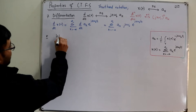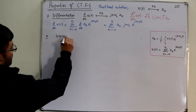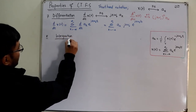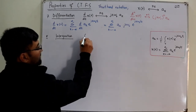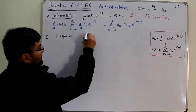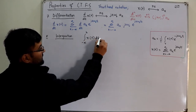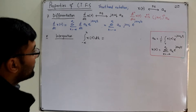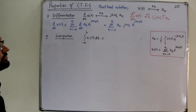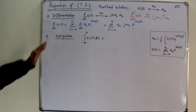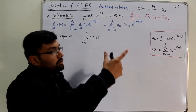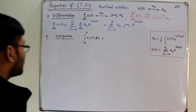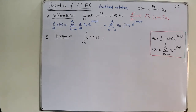Property number eight is integration. If x(t) has Fourier coefficient a_k and is integrated to a finite value t, what are the new Fourier coefficients? Since differentiation and integration are inverse operations, where differentiation gives multiplication by jkω₀, integration should give division by jkω₀, but we must prove it.